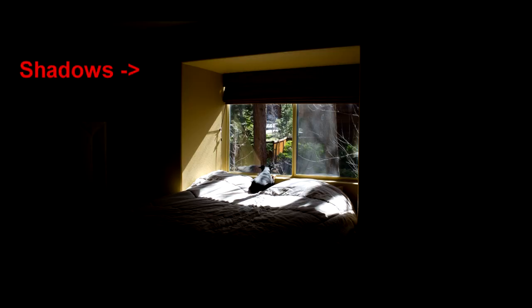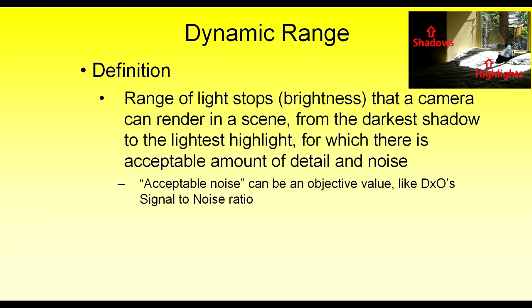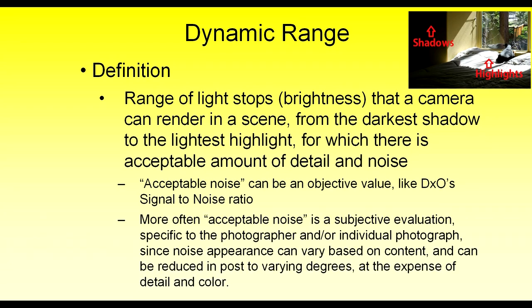Here's an example photograph that shows both deep shadows as well as bright highlights. The extremes — the darkest of the shadows and the lightest of highlights — represent the dynamic range of the scene, which is also called the contrast of the scene. What signifies acceptable noise can vary. There's an objective measure of acceptable noise, and that's what DxO uses on their website when they rate the dynamic range of all the cameras that they test. For their objective value, they're measuring the signal-to-noise ratio. When the noise starts to overwhelm the amount of detail or signal in the deepest of shadows, that's the bottom range of what the dynamic range is for that particular camera.